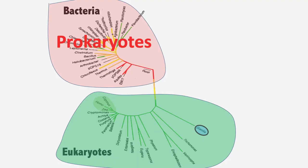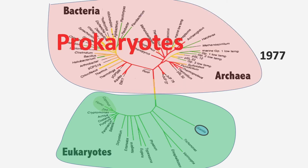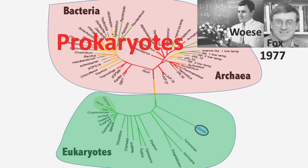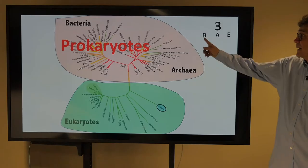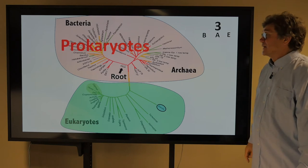Here's that tree again. We just talked about the eukaryotes; here are the prokaryotes. In 1977, the prokaryotes got enormously larger because the archaea were discovered by Woese and Fox. It's a whole new branch of prokaryotes — they're so different from bacteria that they have another name. These are bacteria over here, and these are archaea over here. So there were three domains of life: bacteria, archaea, and eukaryotes.